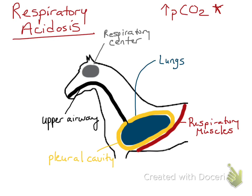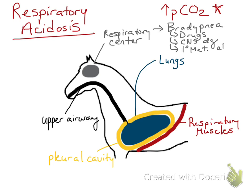I'll use these anatomic structures to better explain how a respiratory acidosis can occur. First, there can be depression of the respiratory center. That respiratory center then tells the lungs to have less frequent breaths, so bradypnea. Causes of depression of this respiratory center in the brain include various drugs, particularly the anesthetic drugs, CNS diseases — primary CNS diseases that involve the medulla — and a primary metabolic alkalosis.